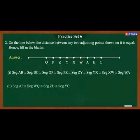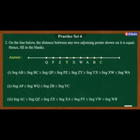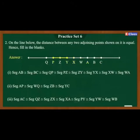Answer 2: Segment AP is congruent to segment WQ, which is congruent to segment ZB, which is congruent to segment YC. Answer 3: Segment AC is congruent to segment QZ, which is congruent to segment ZX, which is congruent to segment XA, which is congruent to segment PY, which is congruent to segment YW, which is congruent to segment WB.